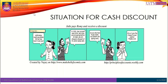15 days later, Julie came back to the store and asked how much she owes. Since she is paying on the 15th day — before the 20-day deadline — she is entitled to the 5% discount Romy promised. Romy confirms her account is 300 ringgit, but since she's paying before 20 days, she gets a 5% discount of 15 ringgit.